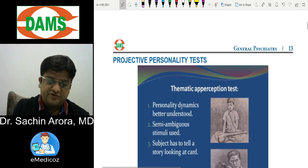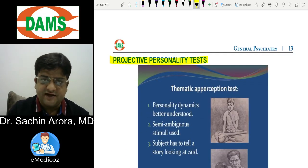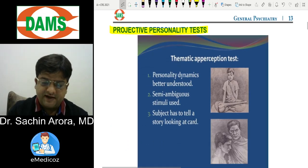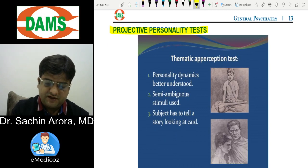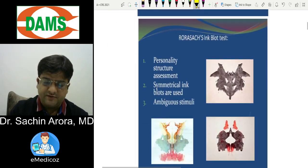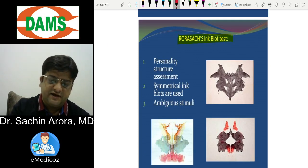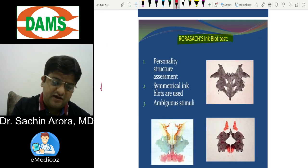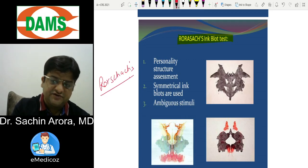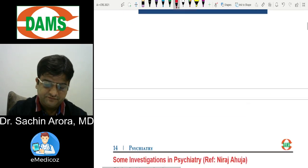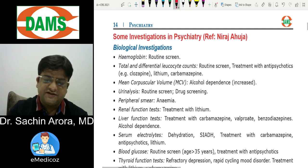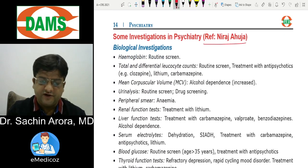Projective personality tests are of two types: TAT (Thematic Apperception Test) and the Rorschach Inkblot Test. In TAT, photographs are shown and the subject tells a story about what is happening, what was happening, and what is going to happen. The correct spelling of Rorschach is R-O-R-S-C-H-A-C-H.